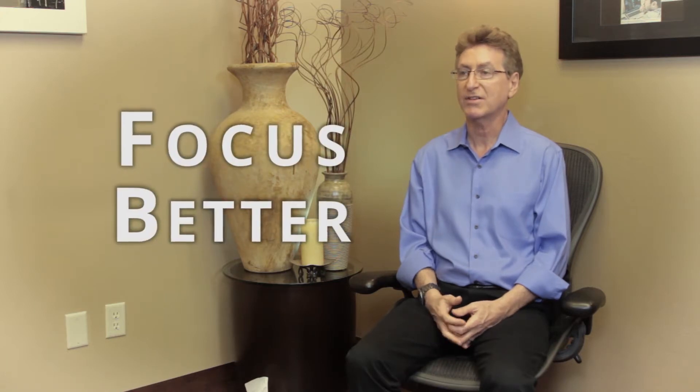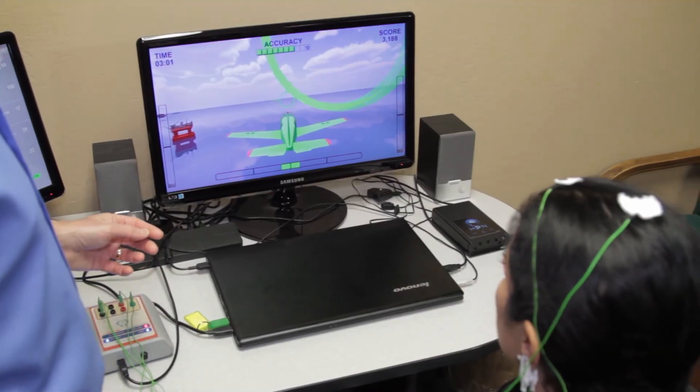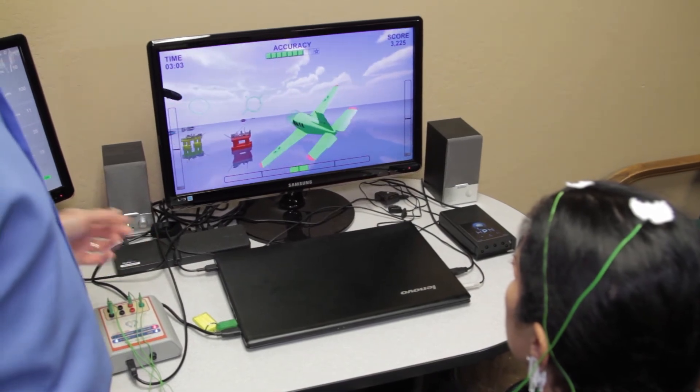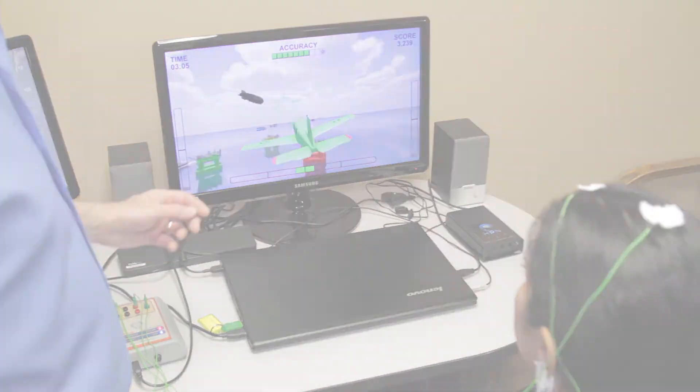If we would like to be able to focus better we can't always will ourselves to do that. If our brain is firing for example a little bit slow and it can't get engaged in an activity, we can train our brain through neurofeedback to overcome that, to fire at a good speed what's appropriate for that particular activity.